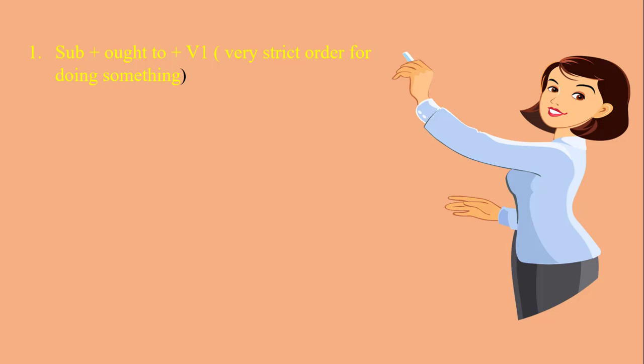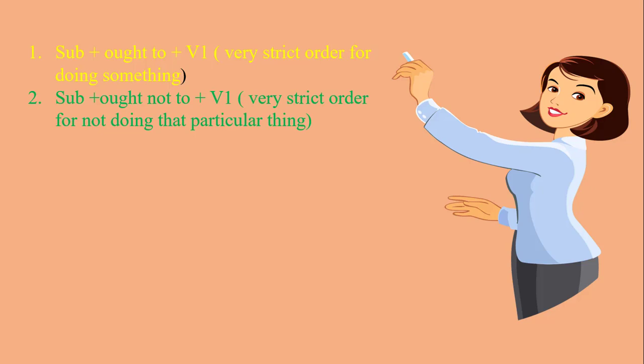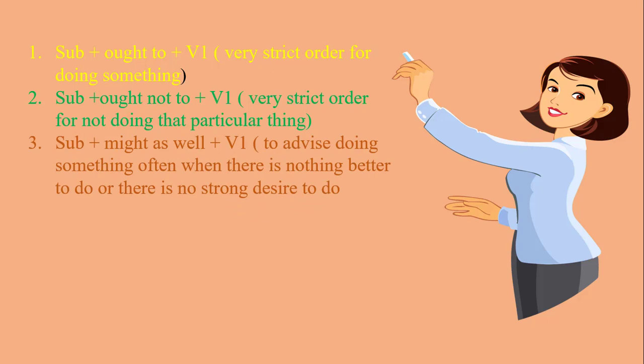The second structure is subject + ought not to + V1. It means a very strict order for not doing that particular thing — it means it should not be done. When we read the questions and identify that a particular thing should not be done, because doing it will cause negative consequences or bad impacts, we use this structure. The third structure, might as well + V1, is used to advise doing something, often when there is nothing better to do or no strong desire to do it, but doing it will have no bad effects.